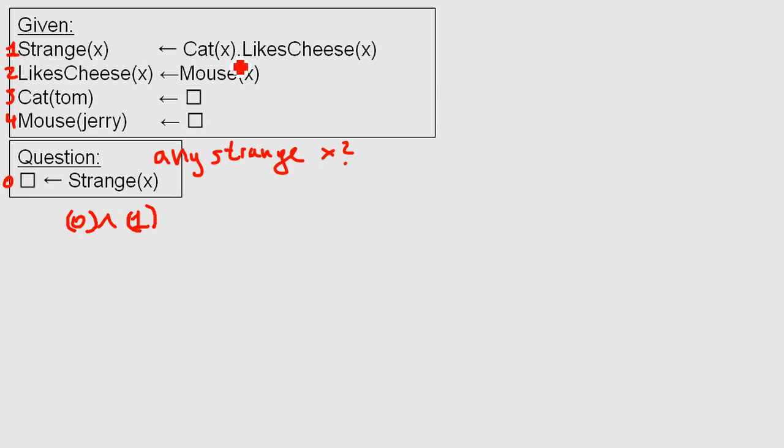I hope you know what's happening now. Strange is on the right side of the arrow and strange is on the left side of the arrow. So what is left is the right part here. Let's write that down. Let's write it like this. The new question now is do we have an X that is a cat and an X that likes cheese?